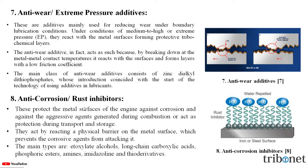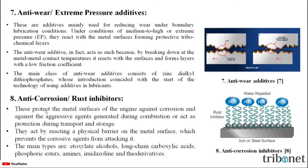The seventh one is anti-corrosion or rust inhibitors. These protect the metal surfaces of the engine against corrosion and against aggressive agents generated during combustion, or act as protection during transport and storage. They act by creating a physical barrier on the metal surface which prevents the corrosive agents from attacking it. The main types are ethoxylate alcohols, long chain carboxylic acids, phosphoric esters, amines, amidazoline, and thio derivatives.